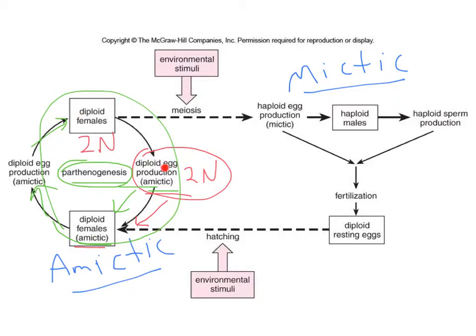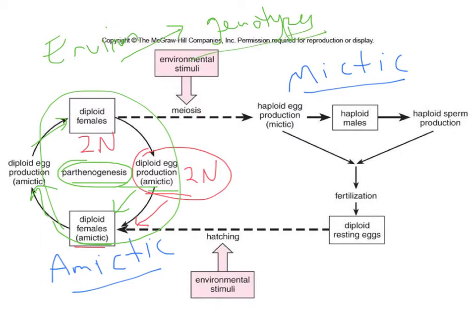Environmental conditions are associated with which cycle is expressed. In spring and summer, when conditions are favorable and nothing too harsh is occurring, rotifers will happily reproduce asexually. If the environment is stable, having genetically similar clones is fine because the environment isn't changing — stability in the environment corresponds to stability in genotypes within the population.